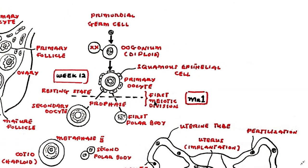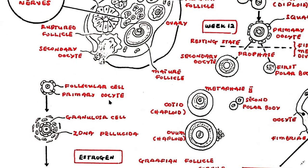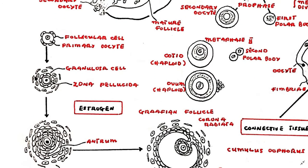Oogonia begin oogenesis by entering meiosis 1 in week 12 of embryonic development. During meiosis 1, the cell is known as the primary oocyte and is surrounded by a thin layer of squamous epithelial cells. The primary oocyte is developmentally arrested in prophase of meiosis 1. The number of primordial follicles vastly increases during the fetal period, but many degenerate, leaving around 400,000 follicles available at puberty. No new oocytes are formed after birth.